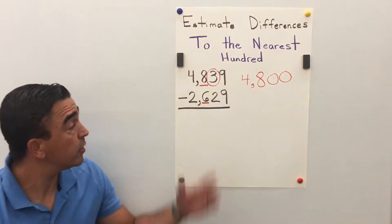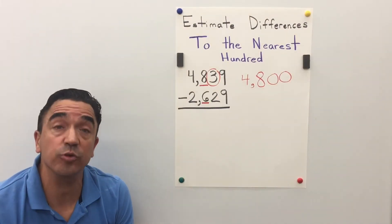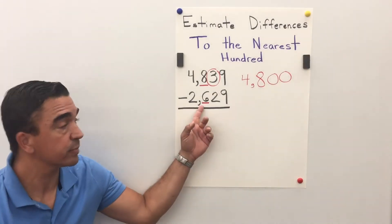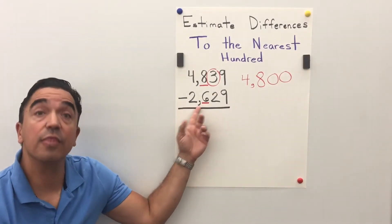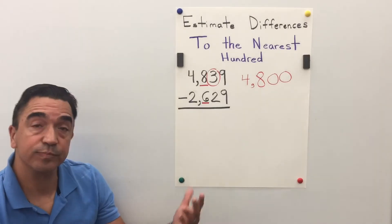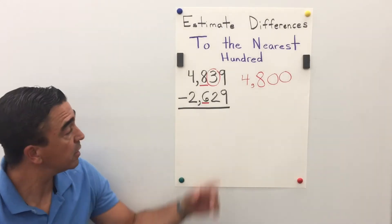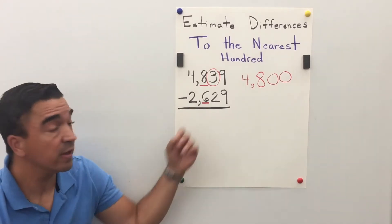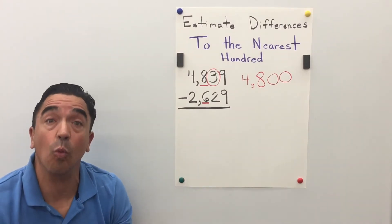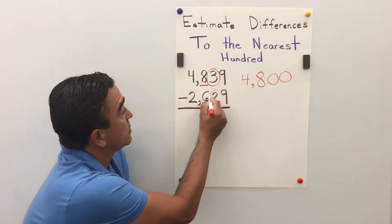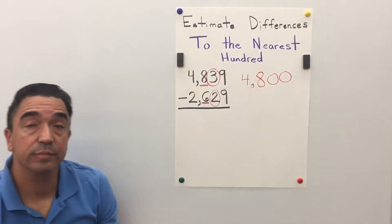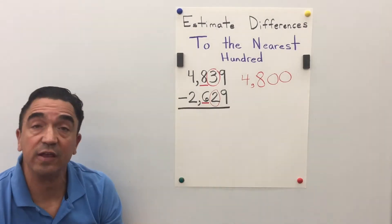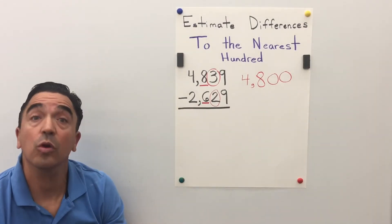Now we're going to round 2629 to the nearest hundred. The six is in the hundreds place, so the two in the tens place is going to tell the six what to do. It's going to tell it to stay the same, so the six remains a six.